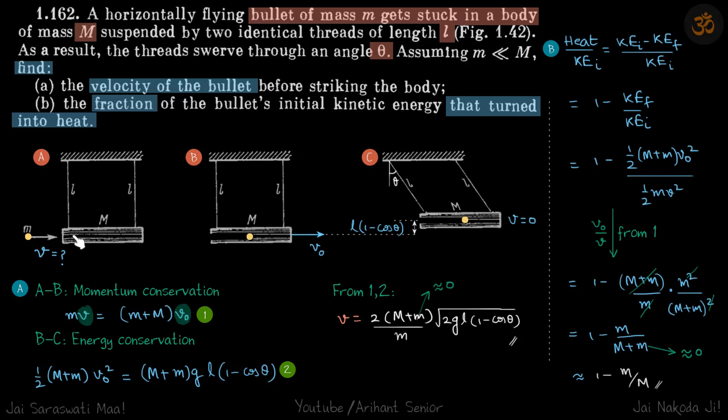It gets stuck, so we are going to find the initial velocity of this whole system by conserving momentum. And then from here to here, we are going to conserve energy to find V_not. And from V_not, we can find V.